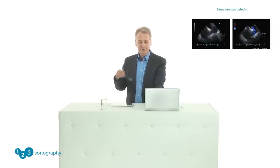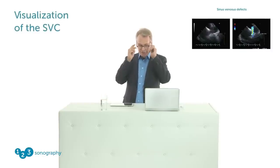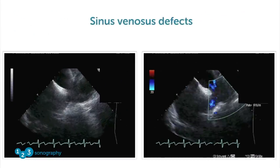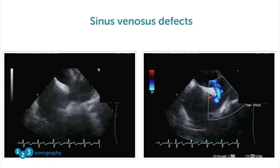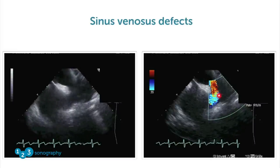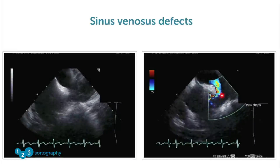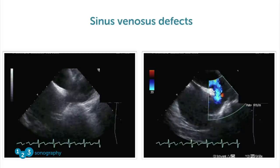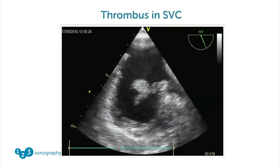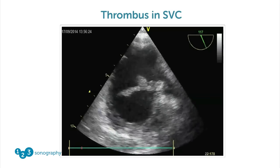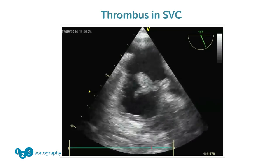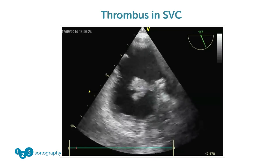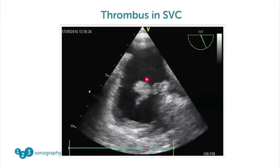TEE also allows us to look at portions of the superior vena cava which are very difficult to visualize from a transthoracic approach, and thereby allows us to see a so-called sinus venosus defect — the shunt is right where the superior vena cava enters the right atrium. Sometimes we have surprising findings, as in this patient who has a central line with a thrombus attached, protruding into the right atrium.